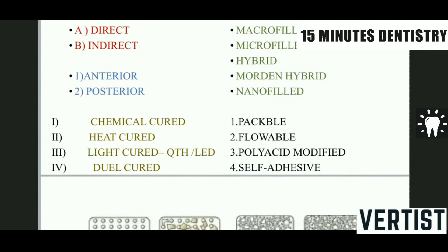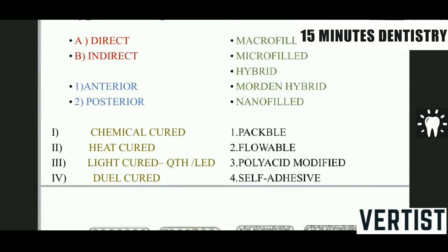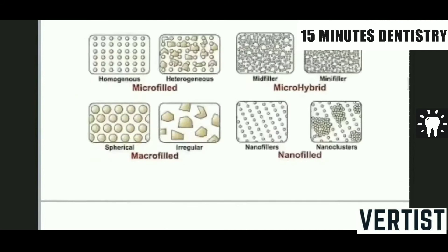To make it simpler: when you consider microfill, macrofill, microhybrid, and nanofill, the specific filler size or particle size will differentiate all these things. These particles are not uniform — some are spherical and some are lathe-cut. Just as in silver amalgam there are spherical alloys and lathe-cut alloys where particles are rounded and rough, in composite also you have rounded particles and rough particles.